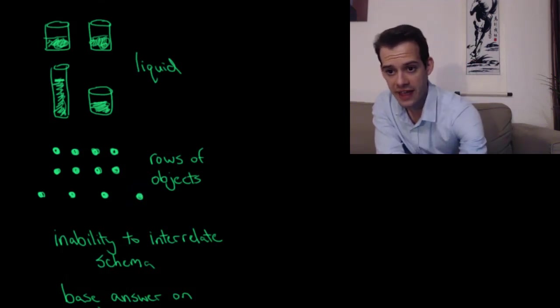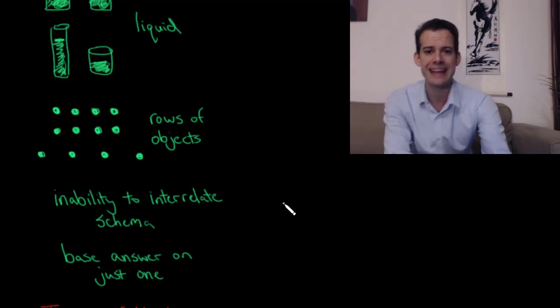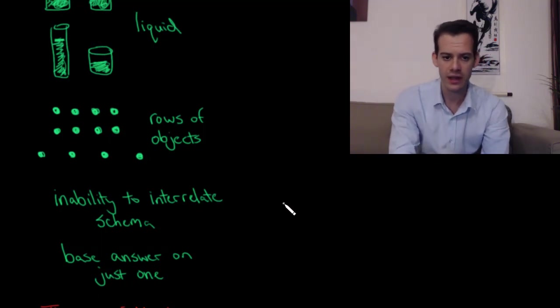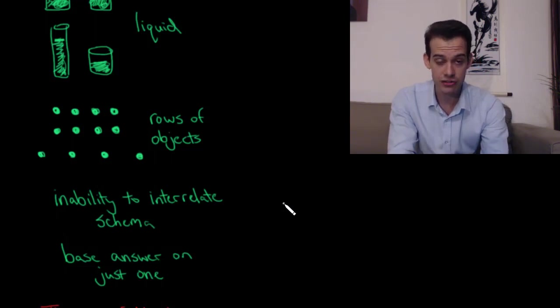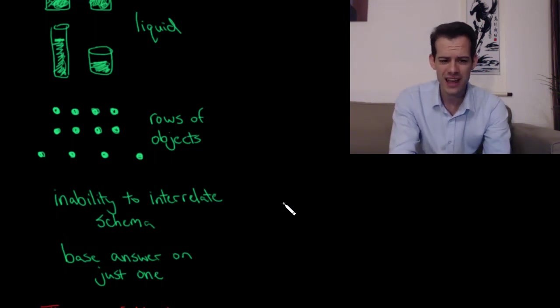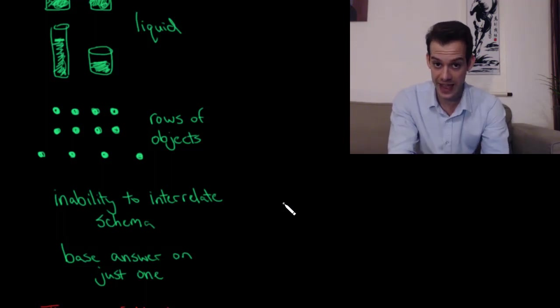Piaget thought that the explanation for this is that the children are not able to interrelate their schema. He thought at this stage they've built up some schema for the world, they're building up these knowledge structures of how things function, but they don't really understand the relationships between the different schema that they have.